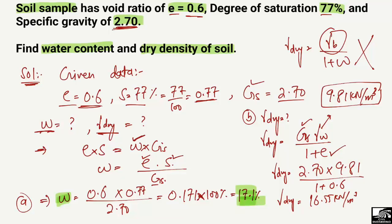So the dry density of the soil sample is 16.55 kN/m³, given a void ratio of 0.6, degree of saturation of 77%, and specific gravity of 2.7. Hope you understood how to find these parameters. Don't forget to subscribe for daily civil engineering videos. Thank you for watching.